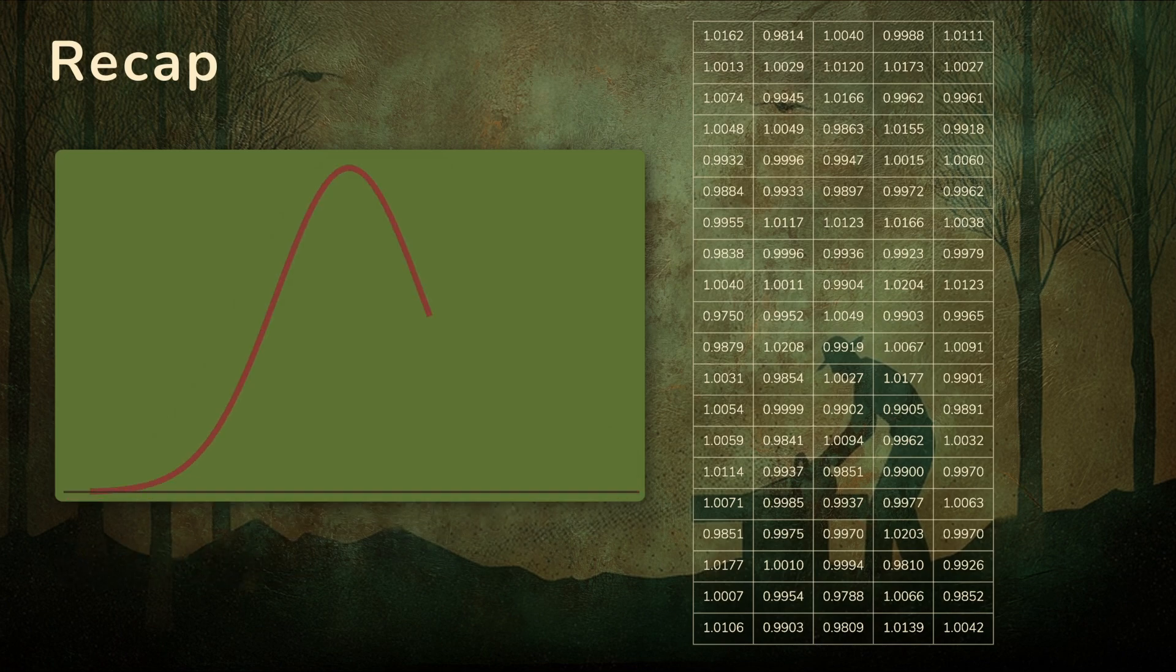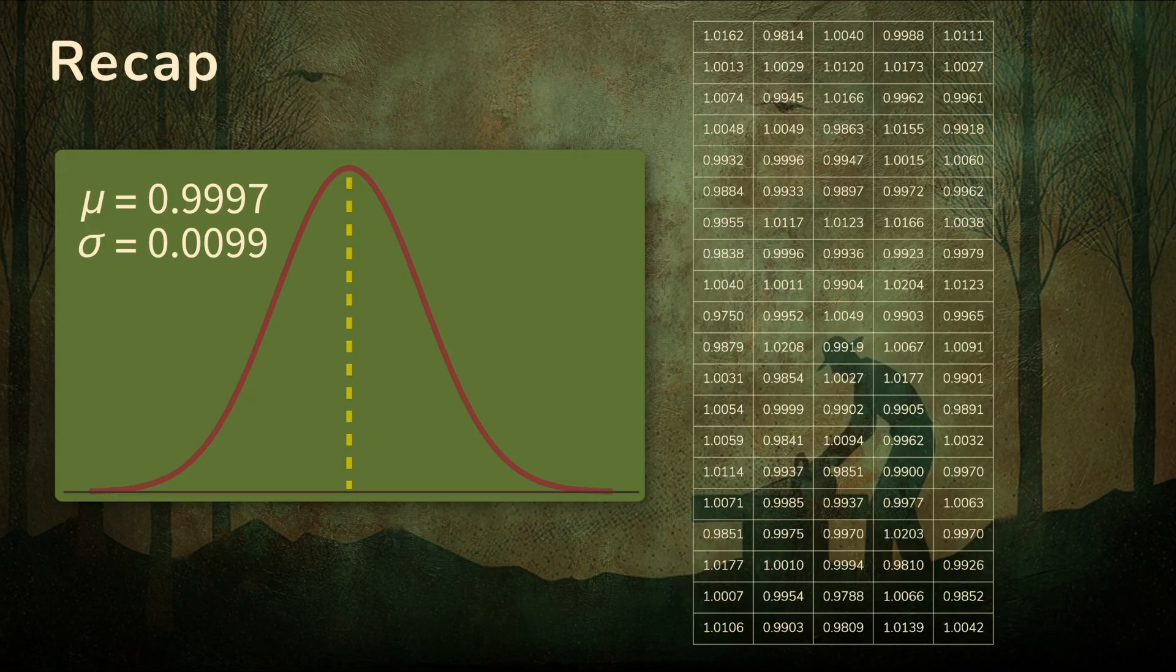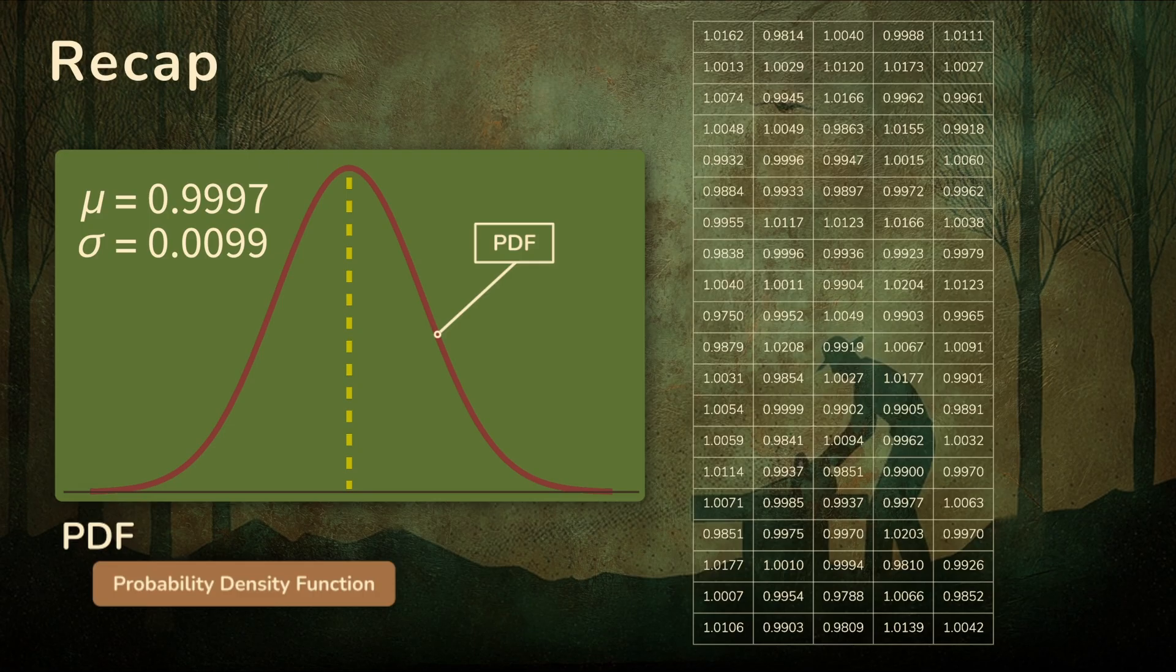That means we can use the data to estimate the mean and standard deviation, which allows us to graph the associated bell curve. This bell curve is a probability density function, or PDF. In practice, the PDF gives us a way to figure out the chance of getting a board in any range of lengths.